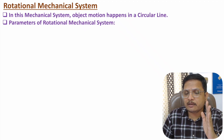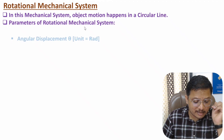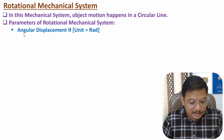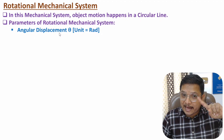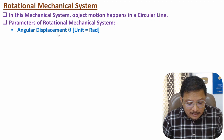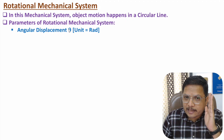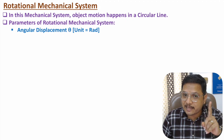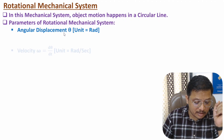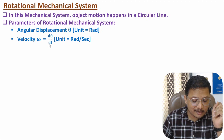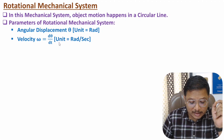In comparison with translational mechanical system, where we have displacement x, in rotational mechanical system we have angular displacement, denoted by theta, with unit of radian. In linear motion we talk about displacement; in circular motion we talk about change in angle. Similarly, in rotational motion we have angular velocity omega, which is dθ/dt — the rate of change of angle with respect to time — with unit radian per second.